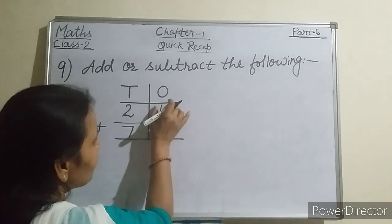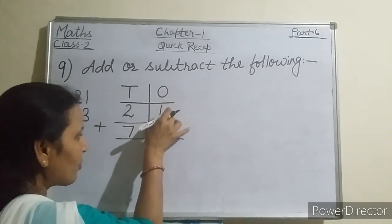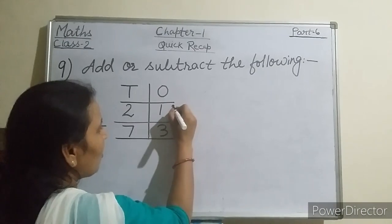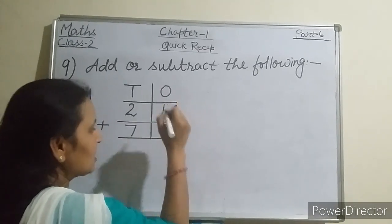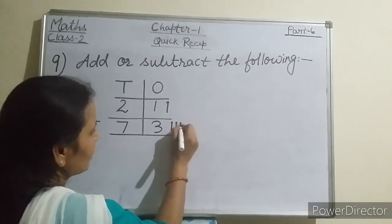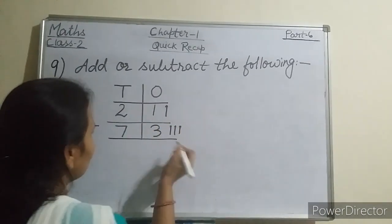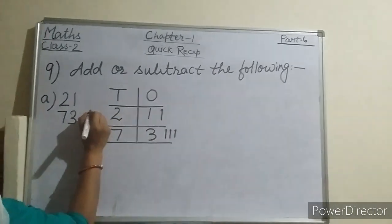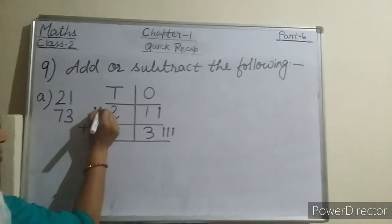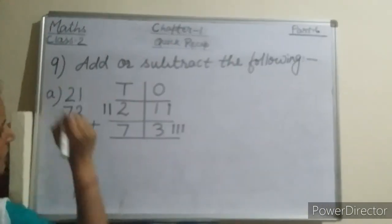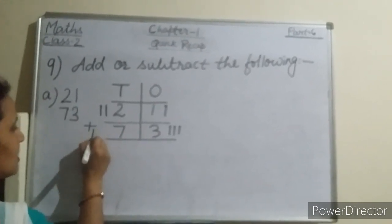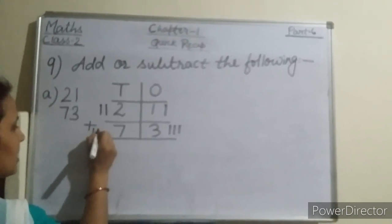We will start adding from the ones place. For 1, I will make 1 matchstick, and for 3, I will make 3 matchsticks. Here also, for 2 tens, I will make 2 matchsticks, and for 7 tens, I will make 7 matchsticks.